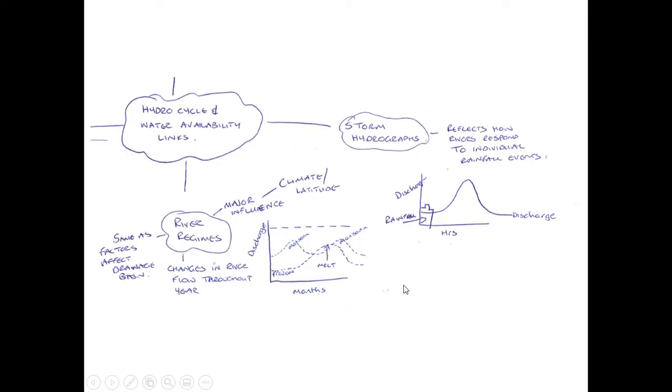Then we also start to look at smaller scale again when we look at river regimes. This is how the flow of a river or the discharge of a river changes throughout the year. So again, links to what are the factors that affect the drainage basin. And again, major influences are things like climate and latitude, the amount of rainfall and the amount of evapotranspiration and the water locked up in the cryosphere.